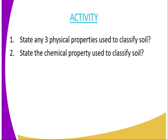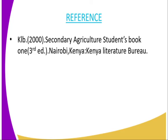We will wind up the lesson with some questions to gauge whether you have understood the lesson. Question one: state any three physical properties used to classify soil. Question two: state the chemical properties used to classify soil. You can refer from the book, Secondary Agriculture Student Book 1, published by KLB, or Kenya Literature Bureau.